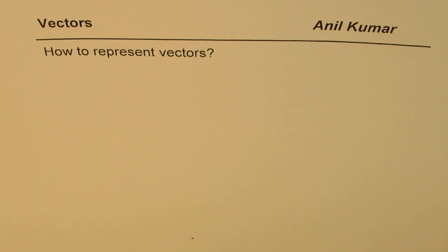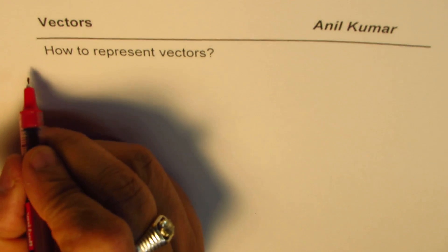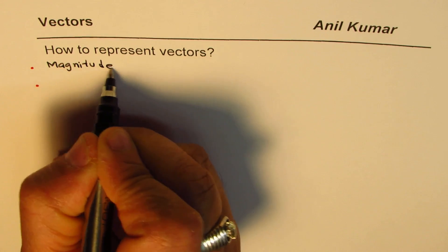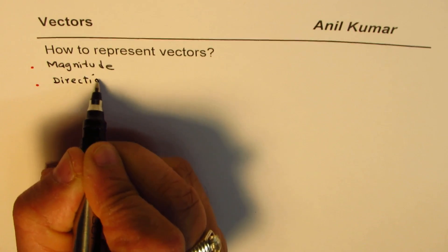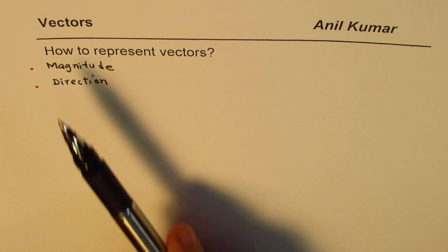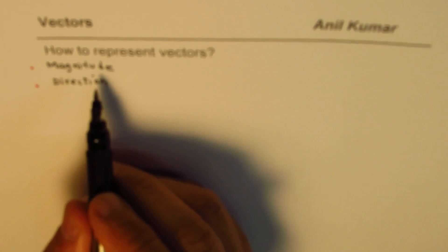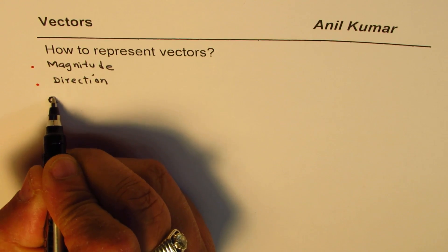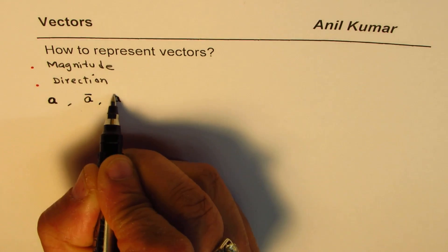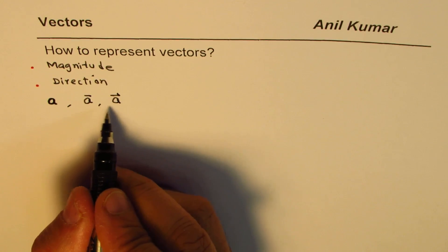I'm Anil Kumar and in this video we will discuss how to represent vectors. Vectors have two important things: magnitude and direction. To represent a vector we should know both. You can write a vector by a bold letter, or with a bar on top — different ways of writing vectors.